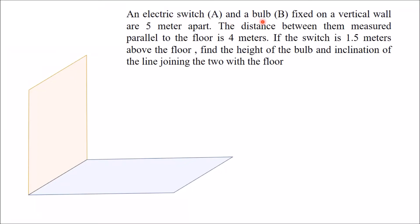An electric switch A and a bulb B fixed on a vertical wall are 5 meters apart. The distance between them measured parallel to the floor is 4 meters. If the switch is 1.5 meters above the floor, find the height of the bulb and inclination of the line joining the two with the floor.